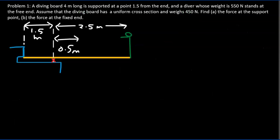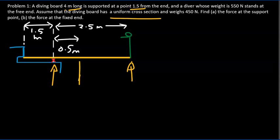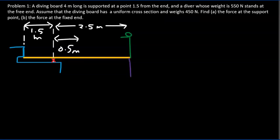Problem 1: A diving board 4 meters in length is supported at a point 1.5 meters from one end. A diver weighing 550 N stands at the free end. The diving board has a uniform cross-section so its weight of 450 N acts at the midpoint, the 2-meter mark. We need to find the force at the support and the force at the fixed end. The first force in our free body diagram is the diver's weight of 550 N.